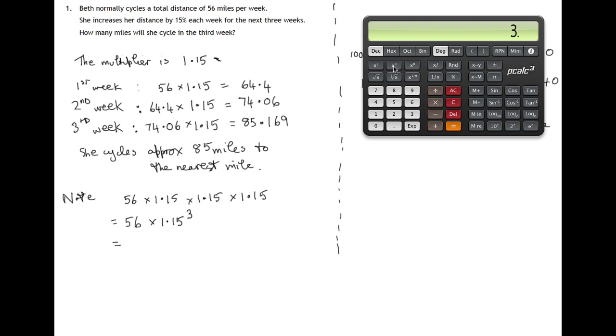We've actually got an X cubed button we could have used. But there it is, 85.169. The same calculation done faster, giving us that final answer.